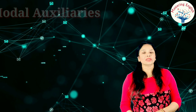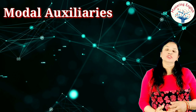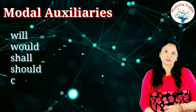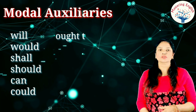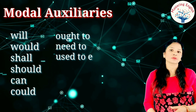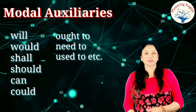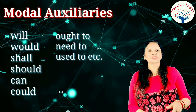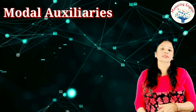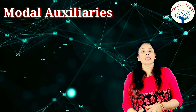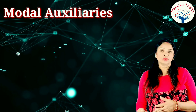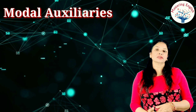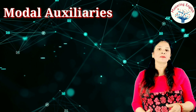We have learned about the modal auxiliaries, which include can, will, would, shall, should, could, ought to, need to, used to, etc. When we change an active voice sentence into passive voice while using these modal auxiliaries, it is very simple. We use 'be' after the modal — for example, can becomes 'can be', could becomes 'could be', and so on.